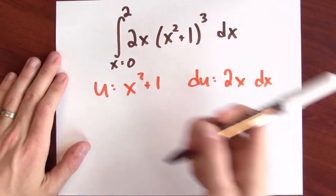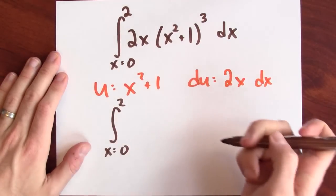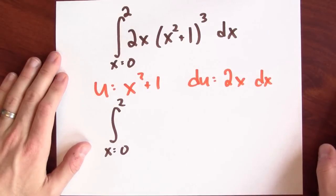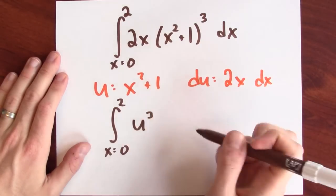This integration problem becomes the integral x goes from 0 to 2. But what's the integrand now? It's u cubed du.